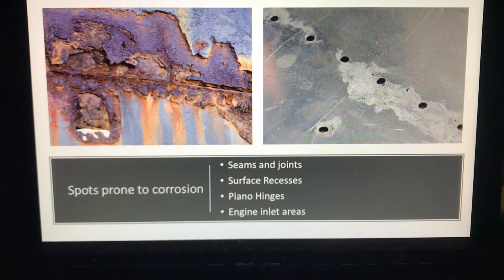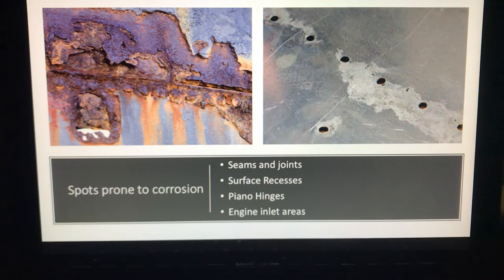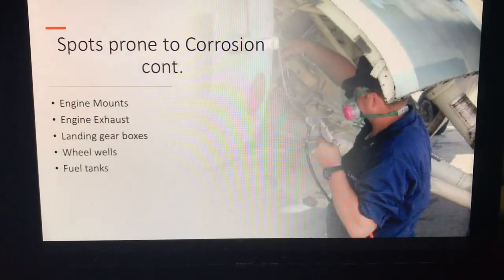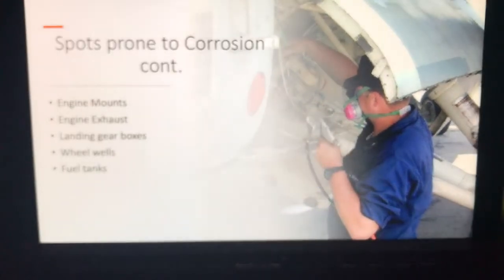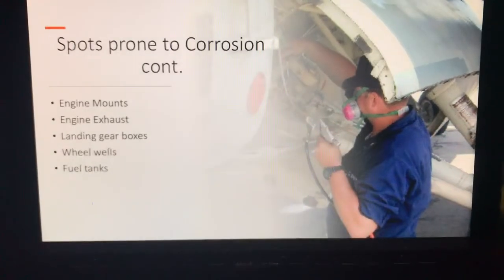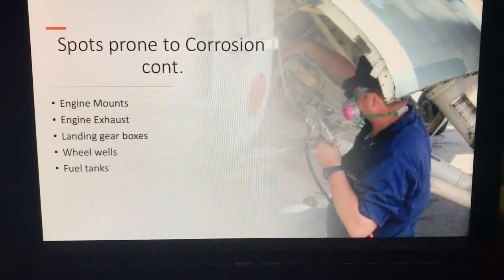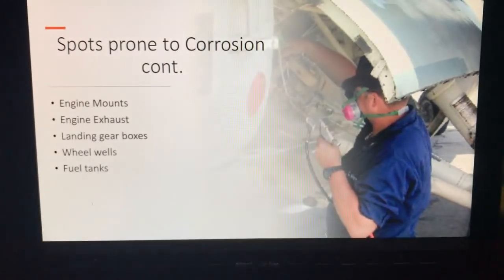There are a couple of hot spots for corrosion. Seams and joints — anywhere the paint or corrosion prevention coating has possibly peeled up — as well as hinges and engine inlet areas. Around the engine mounts and near the engine exhaust, you can have a lot of soot and carbon build-up. Your wheel wells are also susceptible — when taking off in wet or rainy climates, you're going to get a lot of water sitting and collecting up inside the wheel wells.